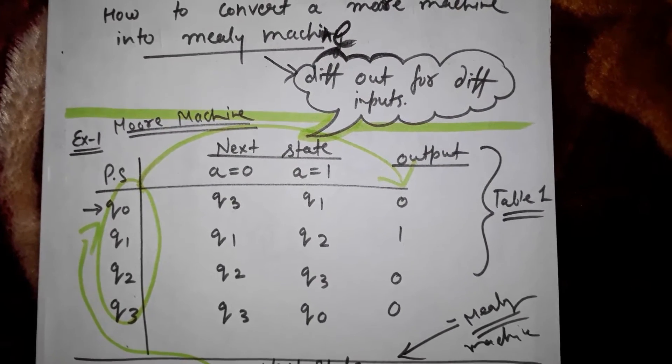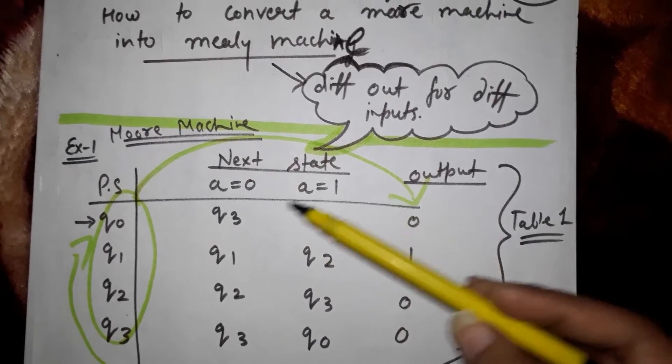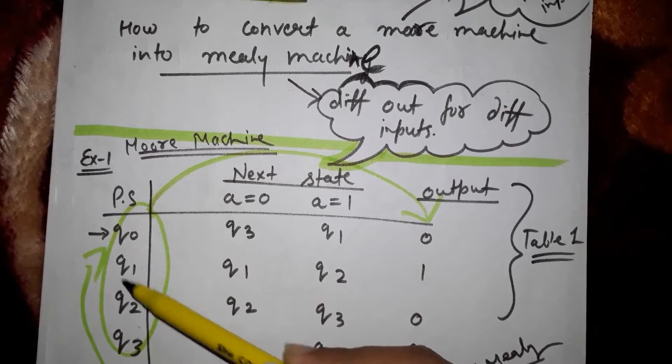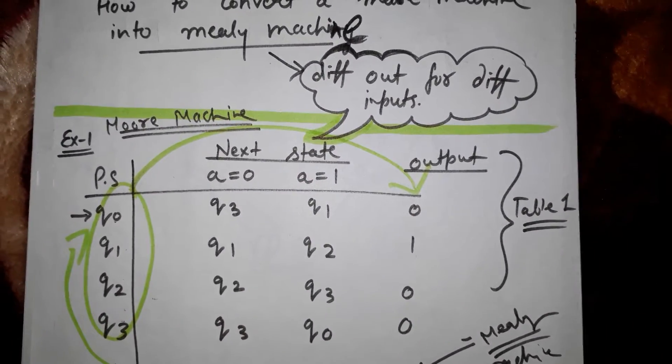As we know, in a Moore machine the output would be the same whether the input is zero or one. These are the present states: q0, q1, q2, and q3. q0 is the initial state. Now the trick is to make another